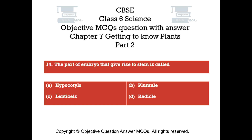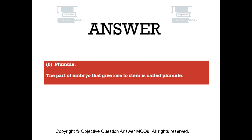Question number fourteen. The part of the embryo that gives rise to the stem is called: Option A hypocotyls. Option B plumule. Option C lenticels. Option D radicle. The right answer is option B — plumule. The part of the embryo that gives rise to the stem is called plumule.